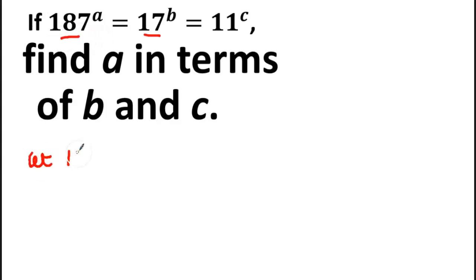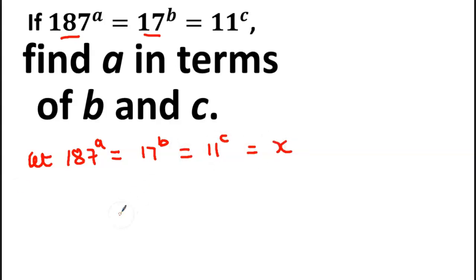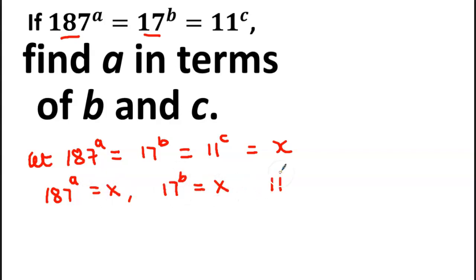Let 187 raised to the power A be equal to 17 raised to the power B, which is equal to 11 raised to the power C, all equal to X. This implies that 187 raised to the power A is equal to X, 17 raised to the power B is equal to X, and 11 raised to the power C is also equal to X.